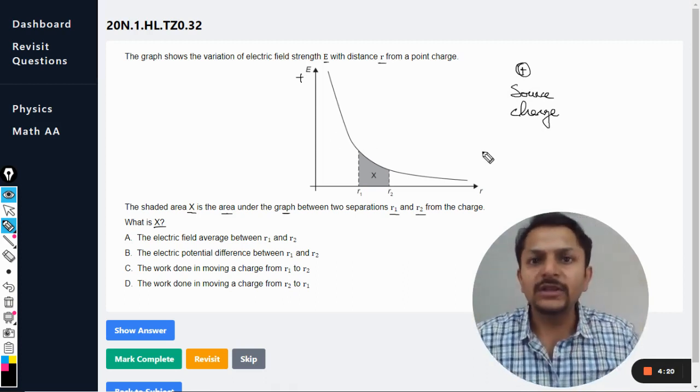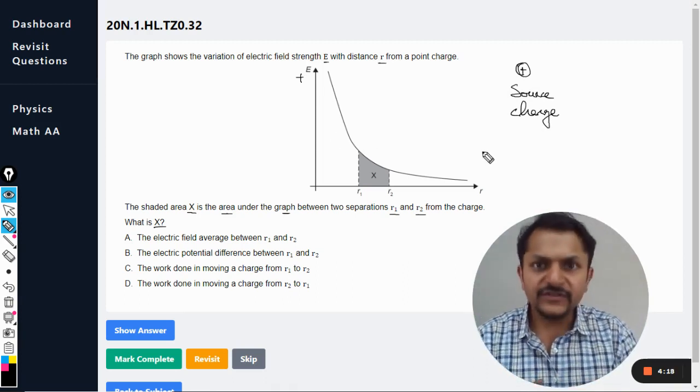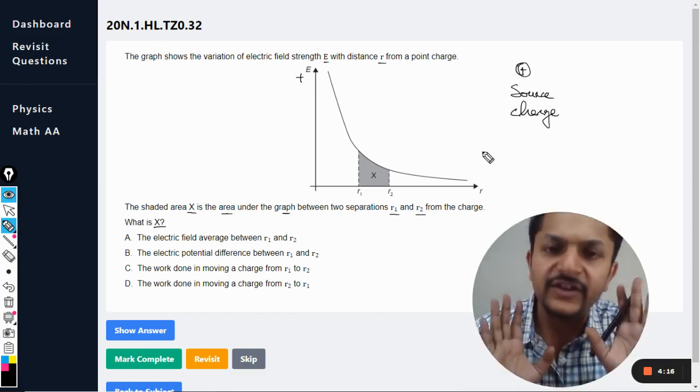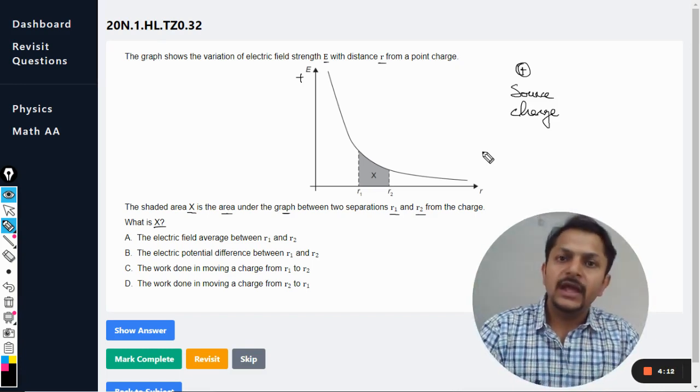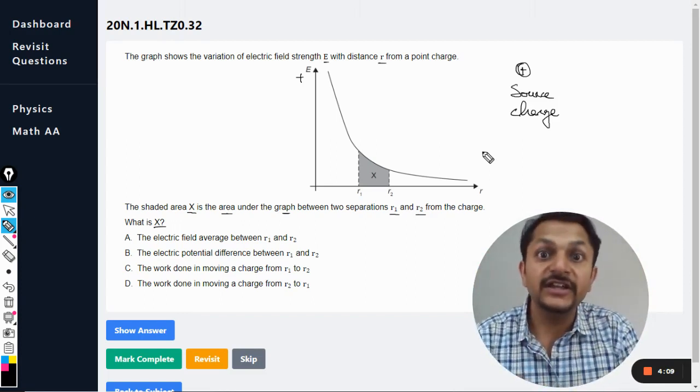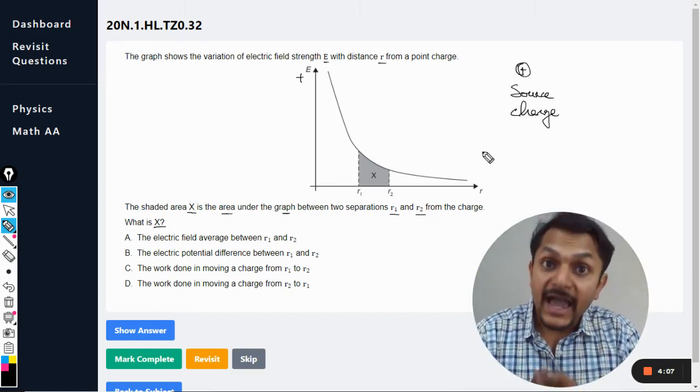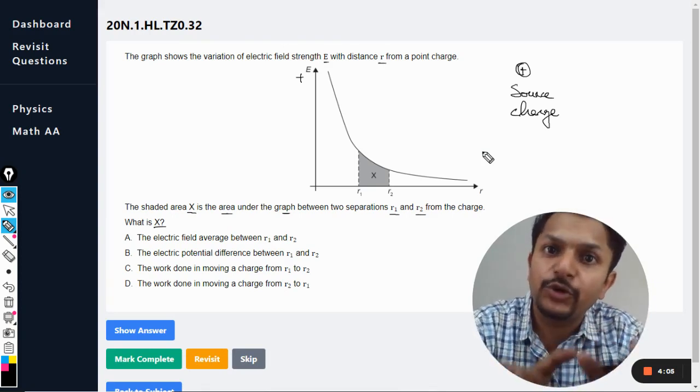In electrostatics, one thing is very clear: a positive charge will create positive electric field as well as positive potential around it. A negative charge will create negative forces, negative electric field, and negative potential.